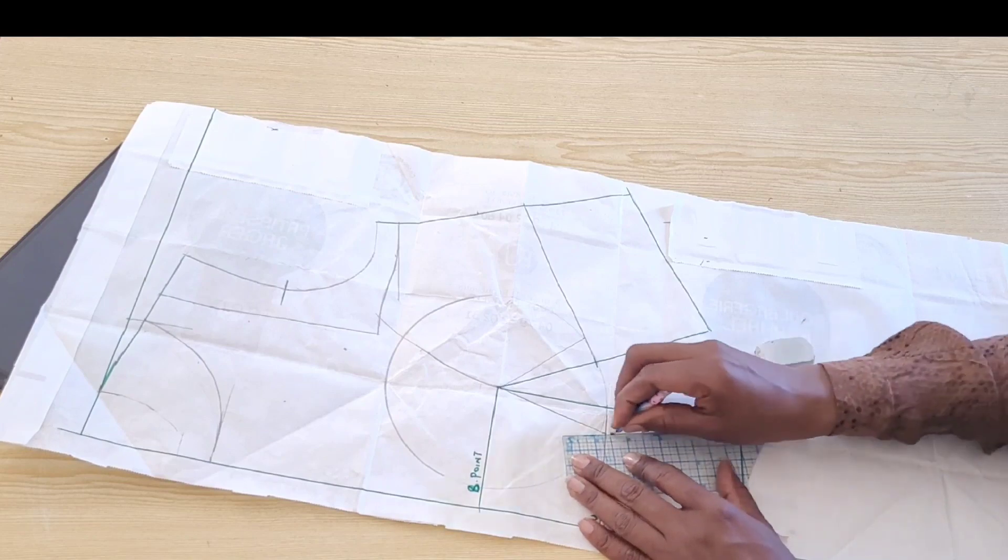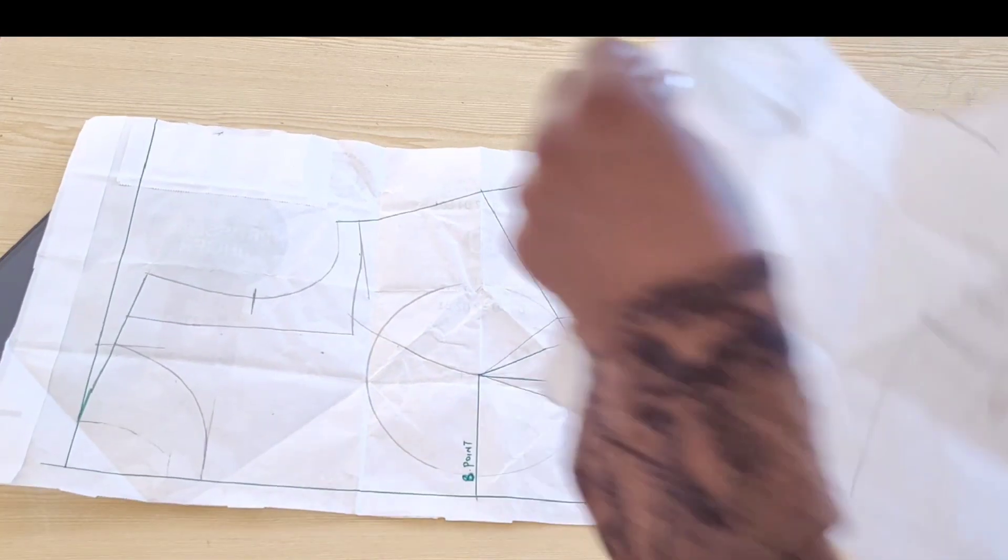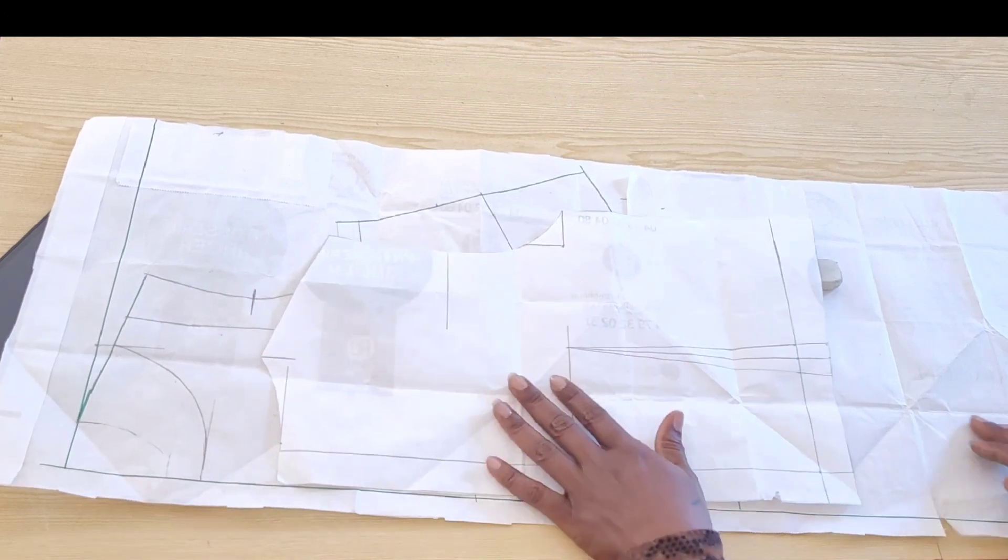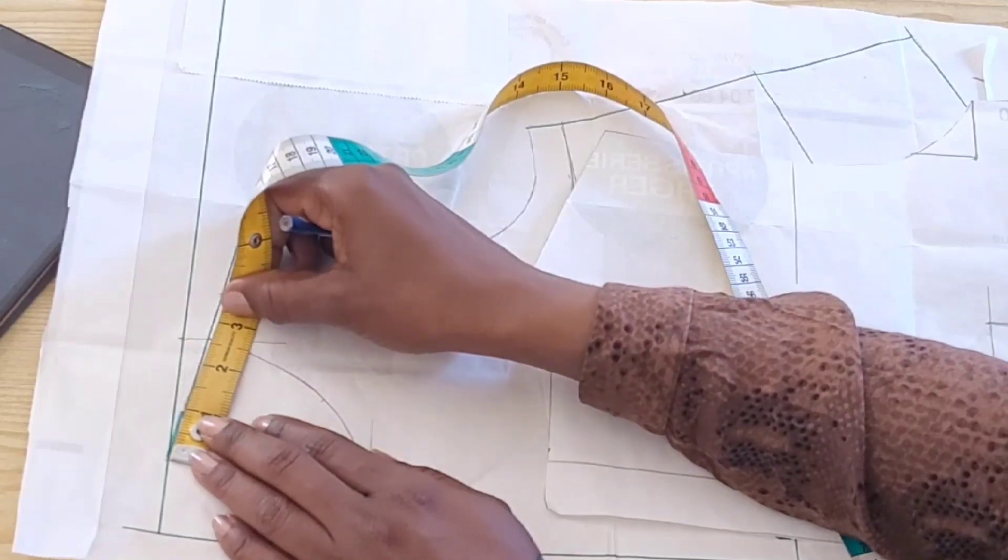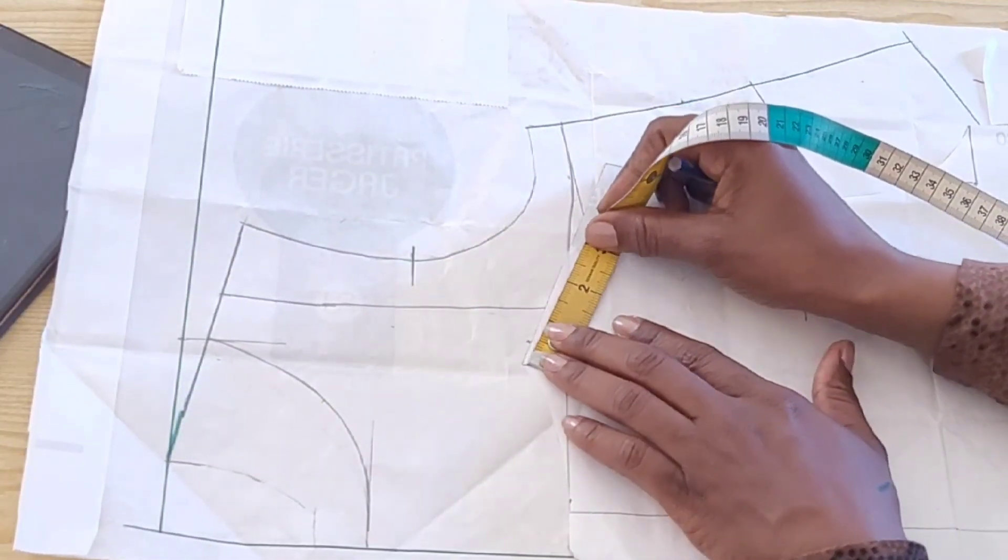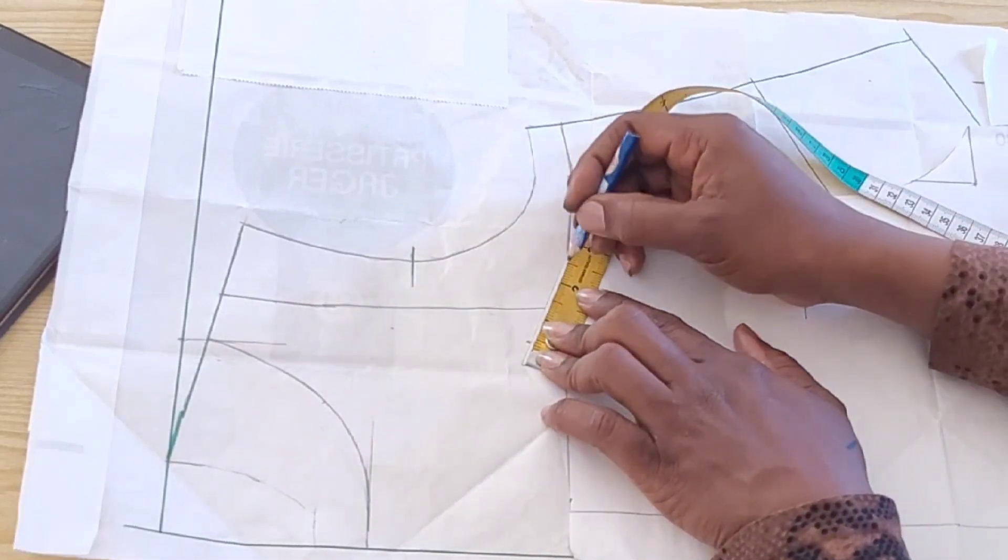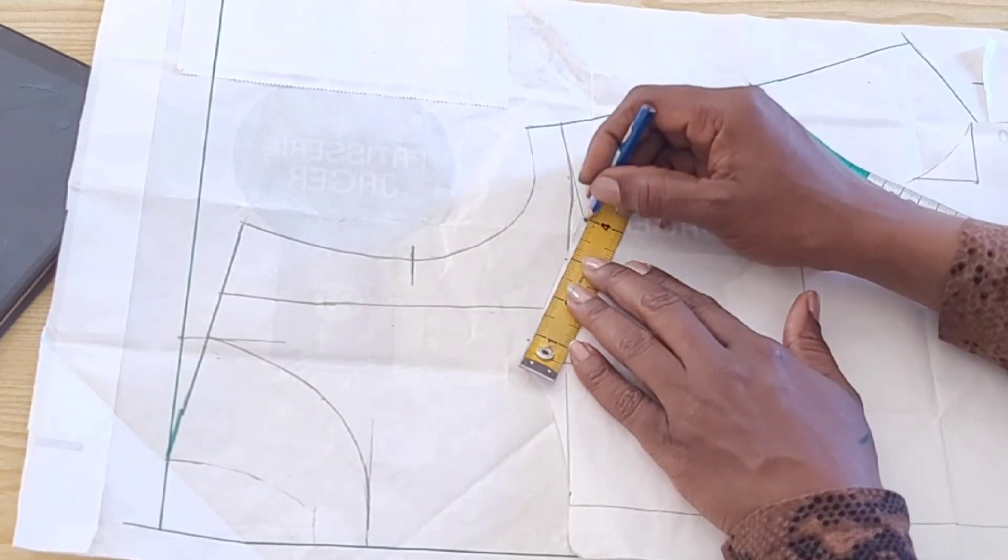At this point, I made a little mistake which I will show you shortly, but before then we'll go ahead and work on the back panel. For the back neck width, I measured from the shoulder point on the front bodice to the neck curve, and this gave me 2.5 inches. I placed these on the shoulder point of my back bodice to mark my back neck width, followed by one inch, the width of my sleeve.